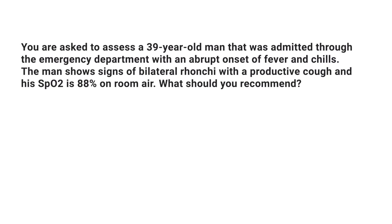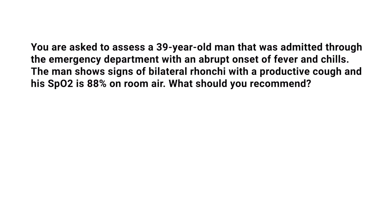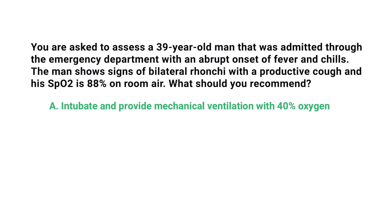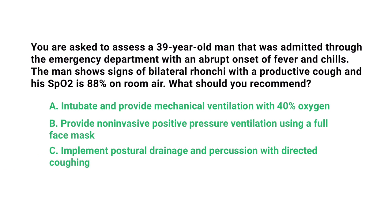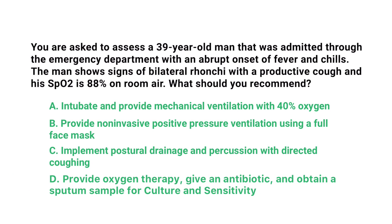You are asked to assess a 39-year-old man admitted through the emergency department with an abrupt onset of fever and chills. He shows signs of bilateral ronchi with a productive cough, and his SpO2 is 88% on room air. What should you recommend? A) Intubate and provide mechanical ventilation with 40% oxygen, B) provide non-invasive positive pressure ventilation using a full face mask, C) implement postural drainage and percussion with directed coughing, or D) provide oxygen therapy, give an antibiotic, and obtain a sputum sample for culture and sensitivity.